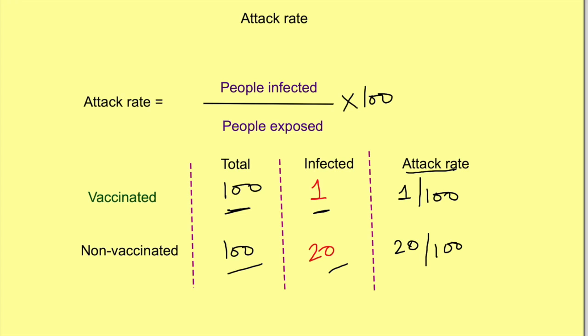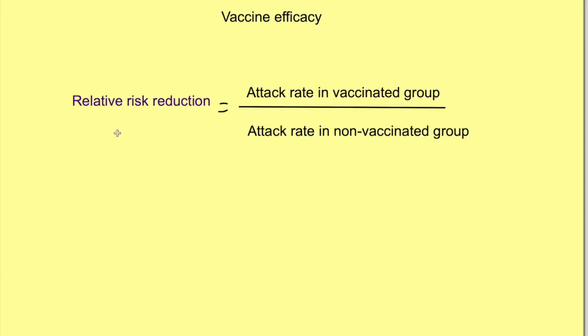To calculate vaccine efficacy, we determine something known as relative risk reduction. This is basically a ratio of attack rates in people with and without the vaccine. We divide attack rate in vaccinated by attack rate in non-vaccinated.